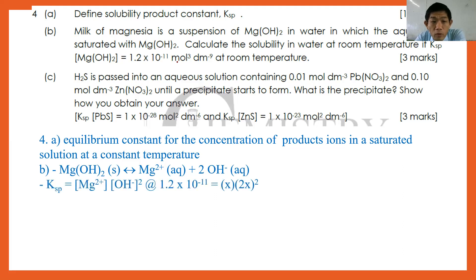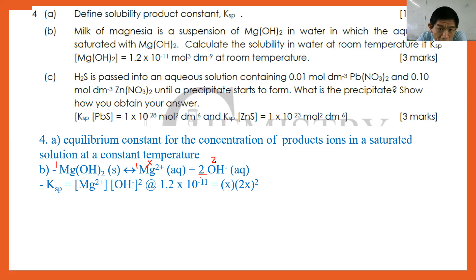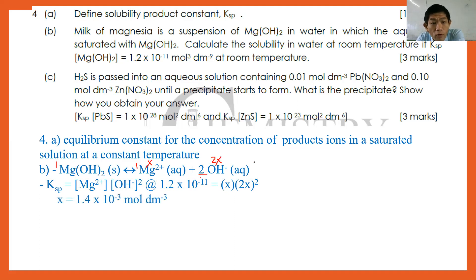Mg(OH)2(s) ⇌ Mg²⁺(aq) + 2OH⁻(aq). So Ksp = [Mg²⁺][OH⁻]². If solubility is X, then [Mg²⁺] = X and [OH⁻] = 2X. Therefore Ksp = X × (2X)² = 4X³ = 1.2 × 10⁻¹¹, giving X = 1.4 × 10⁻⁴ mol dm⁻³. Note that stoichiometrically one magnesium hydroxide gives one Mg²⁺ and two OH⁻ ions.